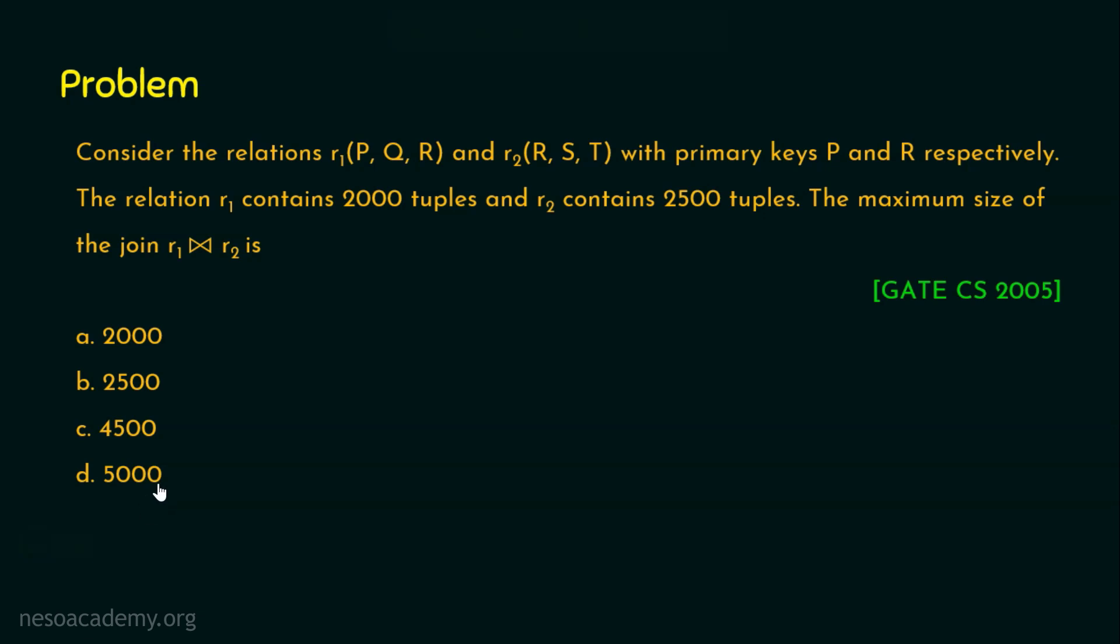At first, we will highlight the important things about this. What is given in the question? Relation R1 with P, Q and R as the attributes and relation R2 with R, S and T as the attributes. And what are the primary keys that are mentioned here? P and R respectively. So P is the primary key attribute in R1 relation and R is the primary key attribute in R2 relation. And what we are required to find? We are required to find the maximum size of the join R1 join R2.